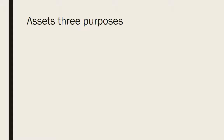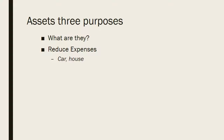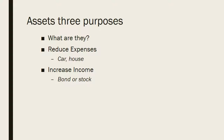In the link below it walks through the three purposes of assets. The first is that they can reduce expenses. So if you own a car or a house, perhaps you no longer have other expenses related to transportation or housing — you could reduce your expenses by purchasing a car or a house rather than leasing or renting. The second purpose is to increase income. If you own a bond or stock in a company, that can generate interest income for you and overall increase your income.